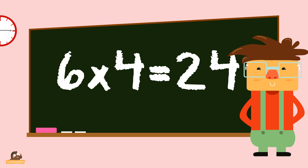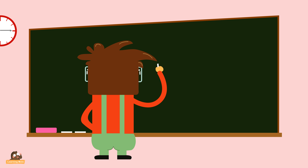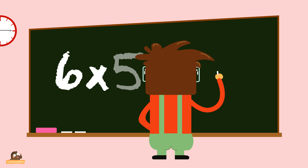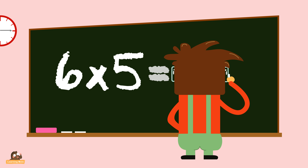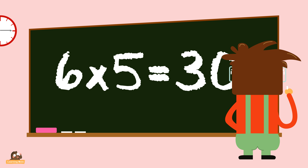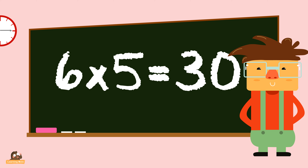Six times three equals eighteen. Six times four equals twenty-four.